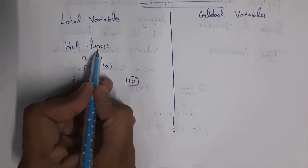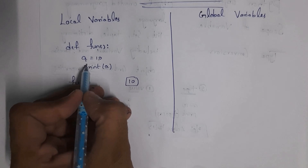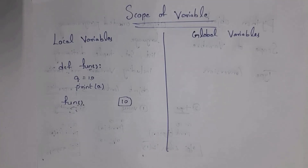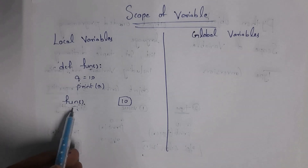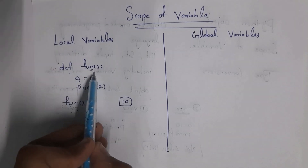Here, 'a' is a local variable because it is declared inside the function 'fun'. After creating the function, you must call it by giving the function name — otherwise you won't get output. When you call the function, Python checks if 'fun' is available, and if so, executes the code inside and generates the output.